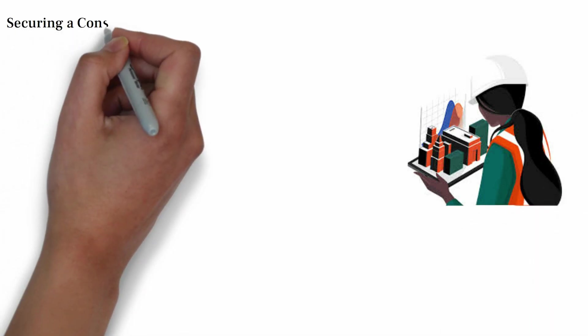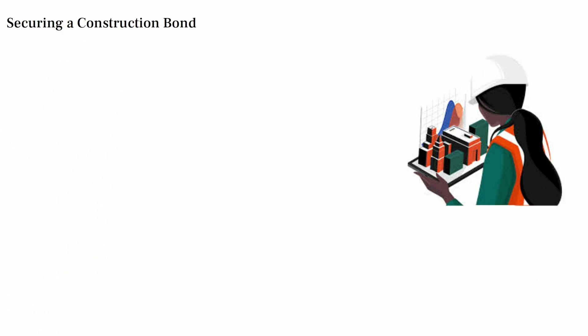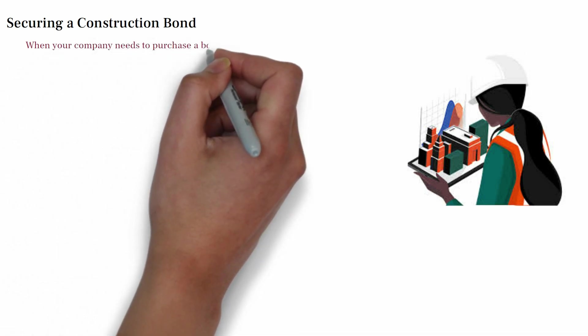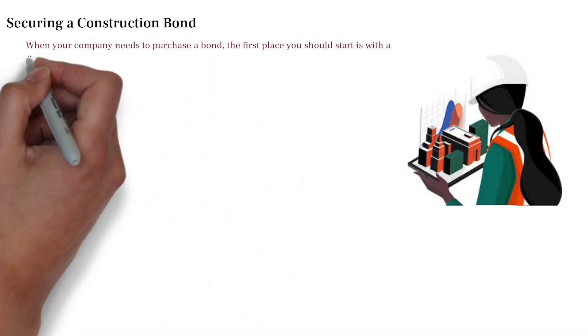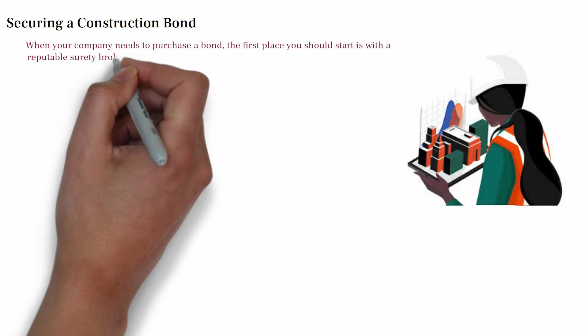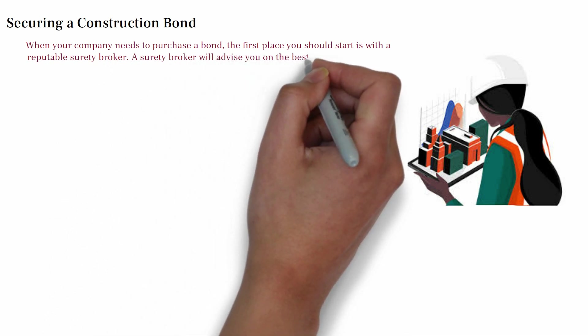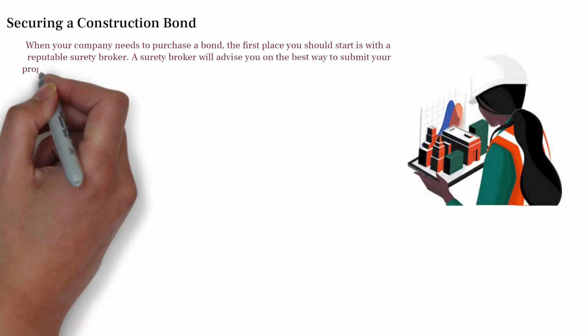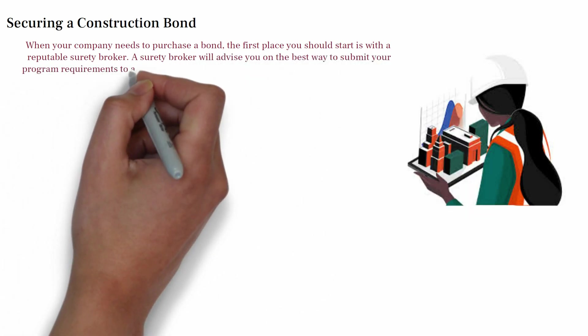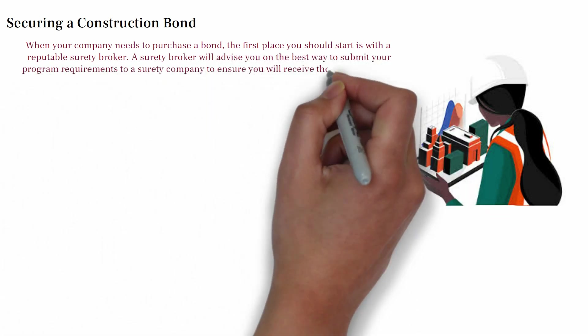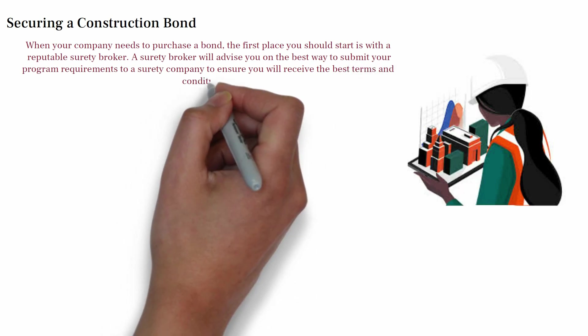Securing a construction bond — when your company needs to purchase a bond, the first place you should start is with a reputable surety broker. A surety broker will advise on the best way to submit your program requirements to a surety company to ensure you receive the best terms and conditions.